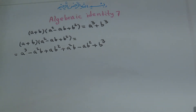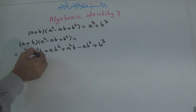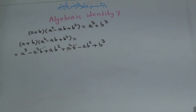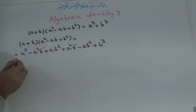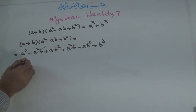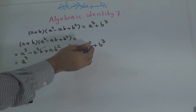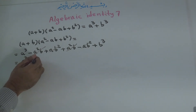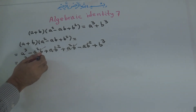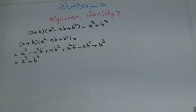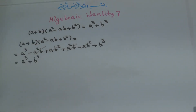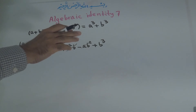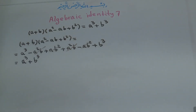Now we cancel negative A to the power of 2 B with positive A to the power of 2 B, and AB to the power of 2 with negative AB to the power of 2. What remains is A to the power of 3 plus B to the power of 3. So we have proved that A plus B times A to the power of 2 minus AB plus B to the power of 2 equals A to the power of 3 plus B to the power of 3.